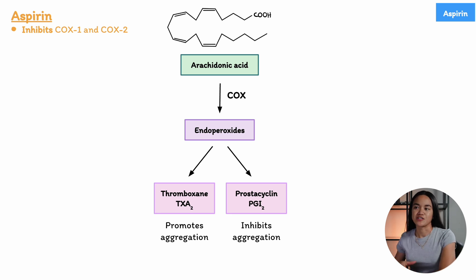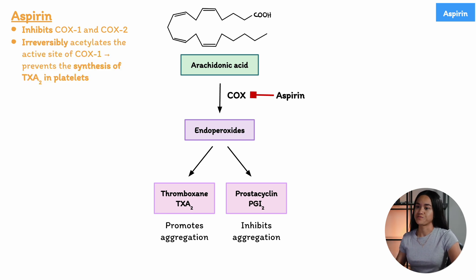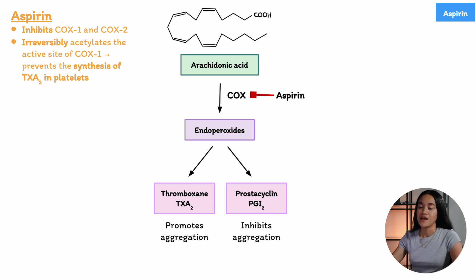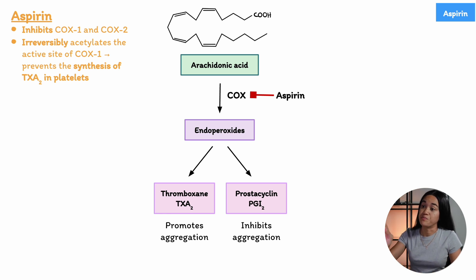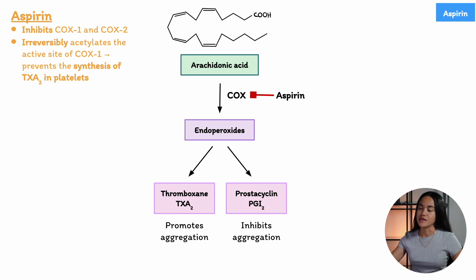The second molecule is prostacyclin, which inhibits platelet activation and aggregation and is produced in endothelial cells. An important thing to note about aspirin is that it's an irreversible inhibitor of cyclooxygenase. It irreversibly inhibits the enzyme because it acetylates the active site of COX — the site where the substrate binds. That acetylation is a covalent modification of the protein, which means once aspirin has bound to the active site and acetylated it, even once the aspirin is removed, that cyclooxygenase is permanently inactivated in the affected cell.